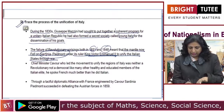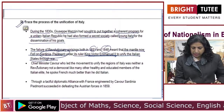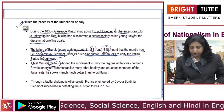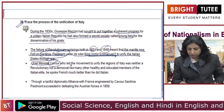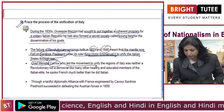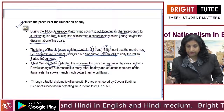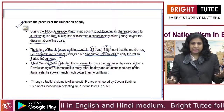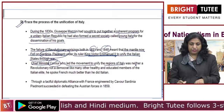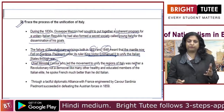With Sardinia-Piedmont, the chief minister Cavour led the movement to unify the regions of Italy. Cavour was a chief minister.